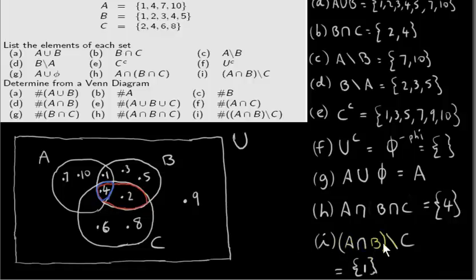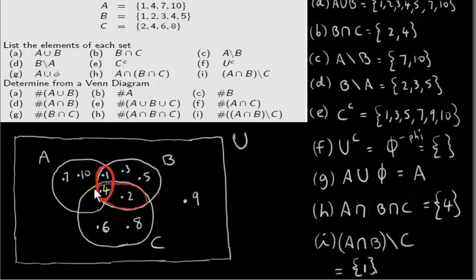To get A intersecting B less C, we look at A intersecting B, which consists of the elements one and four — they're the elements that are both in set A and in set B. And we subtract set C away from this set, which means we subtract the four away, and we're just left with the element one.